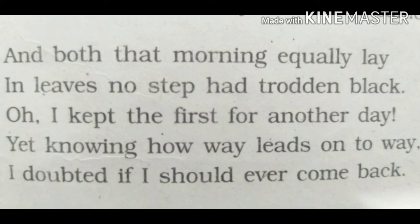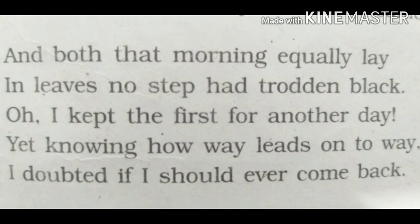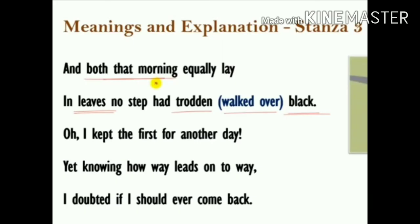Let's begin stanza 3: 'And both that morning equally lay In leaves no step had trodden black; Oh, I kept the first for another day! Yet knowing how way leads on to way, I doubted if I should ever come back.' In these lines the poet wants to tell us that when a person takes a decision, it is not possible to reverse it. Both roads were equally covered — equally lay — with yellow leaves, showing no one had taken that path. This symbolises that the choices open to the poet are both unknown to him.